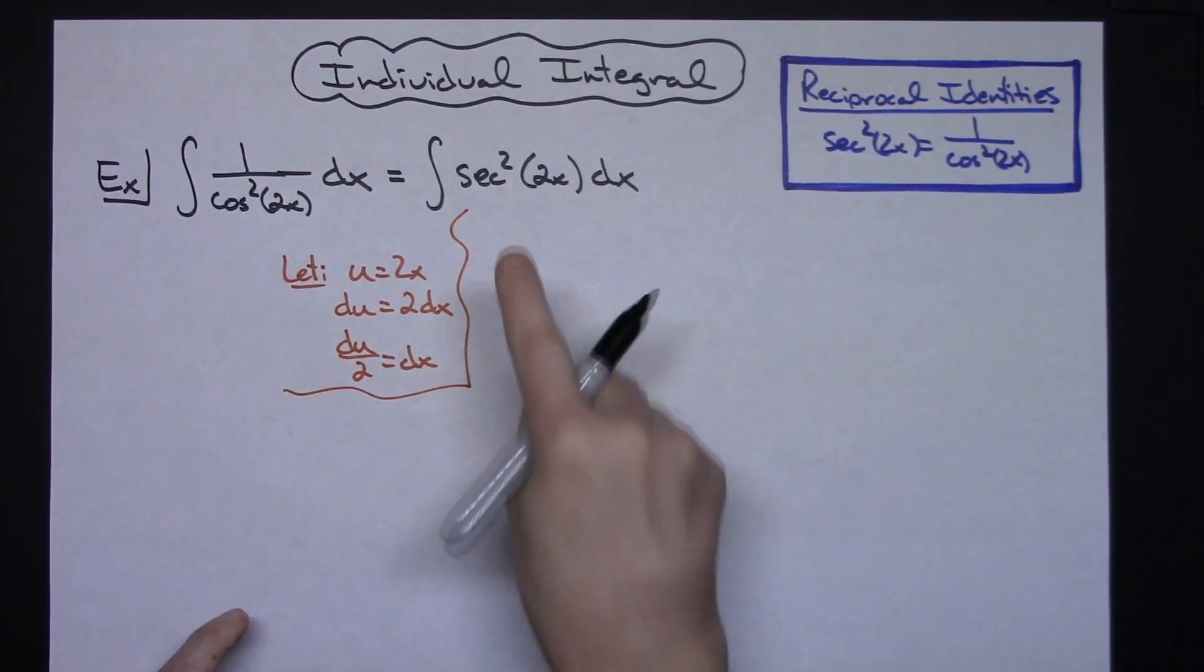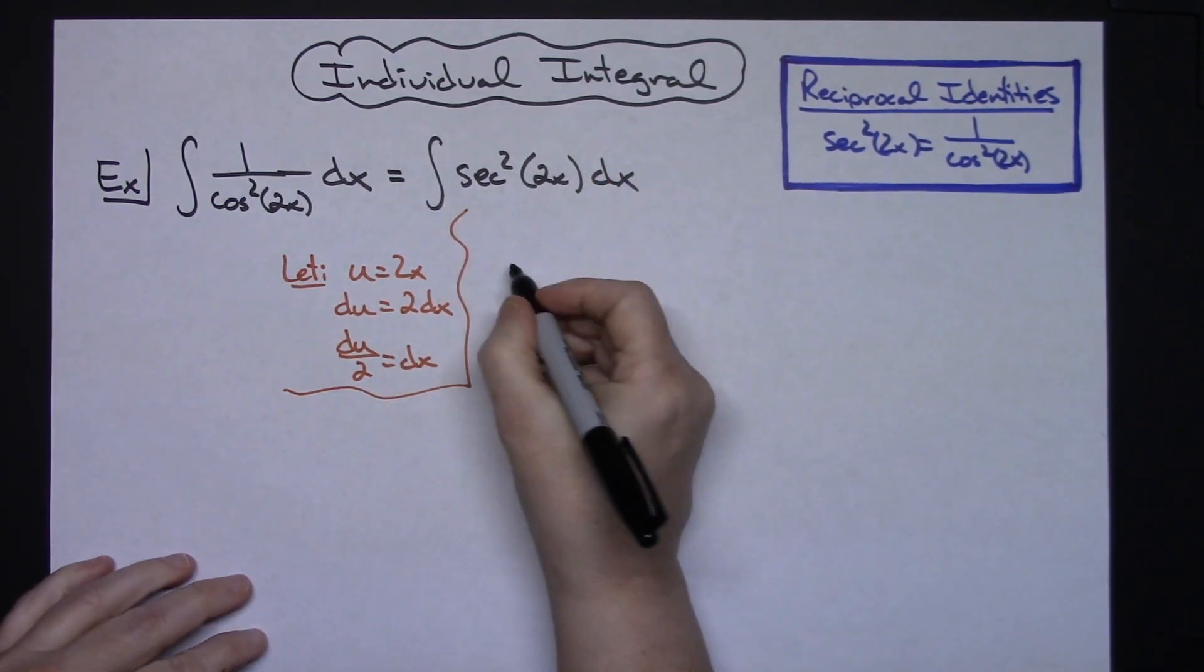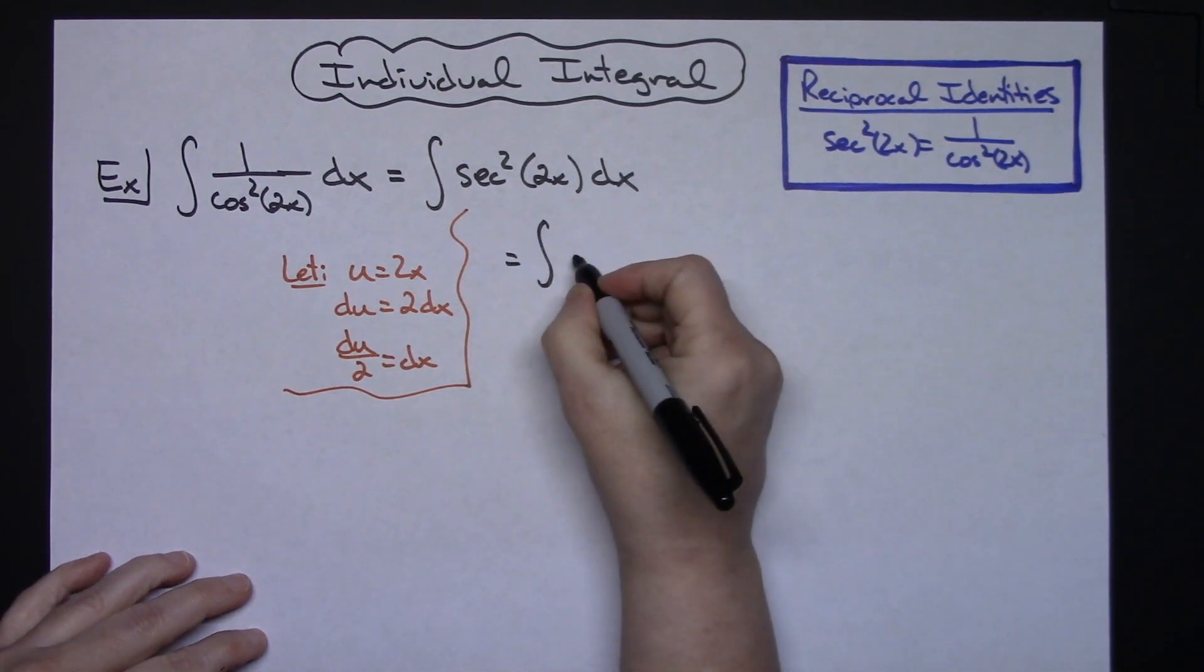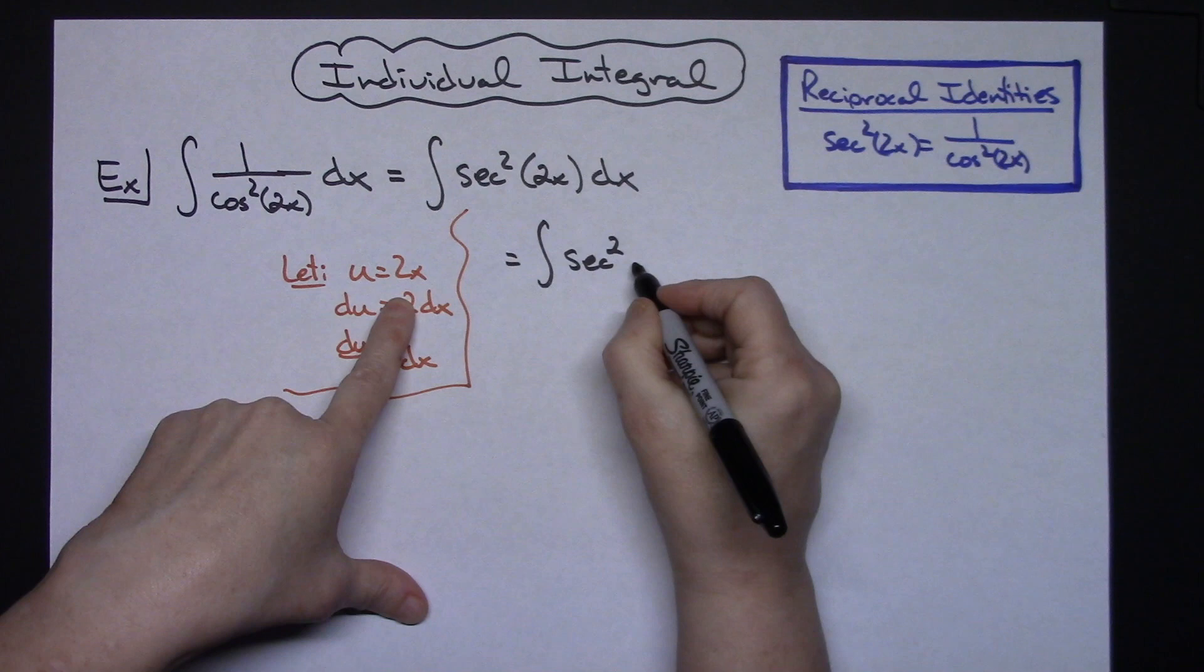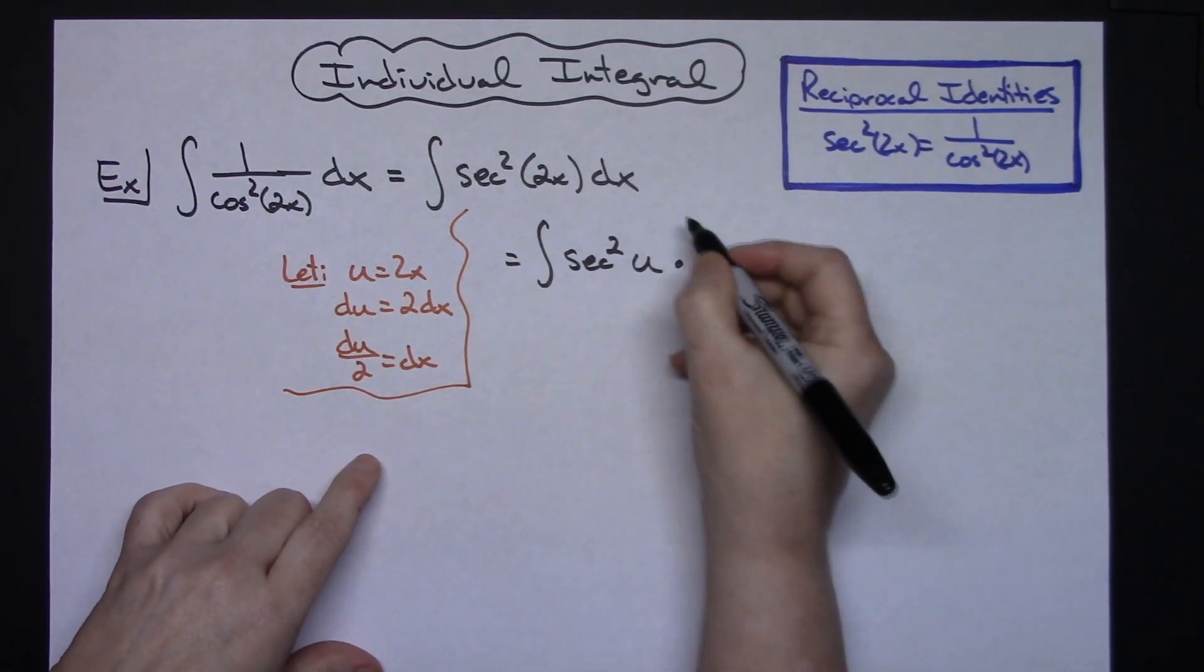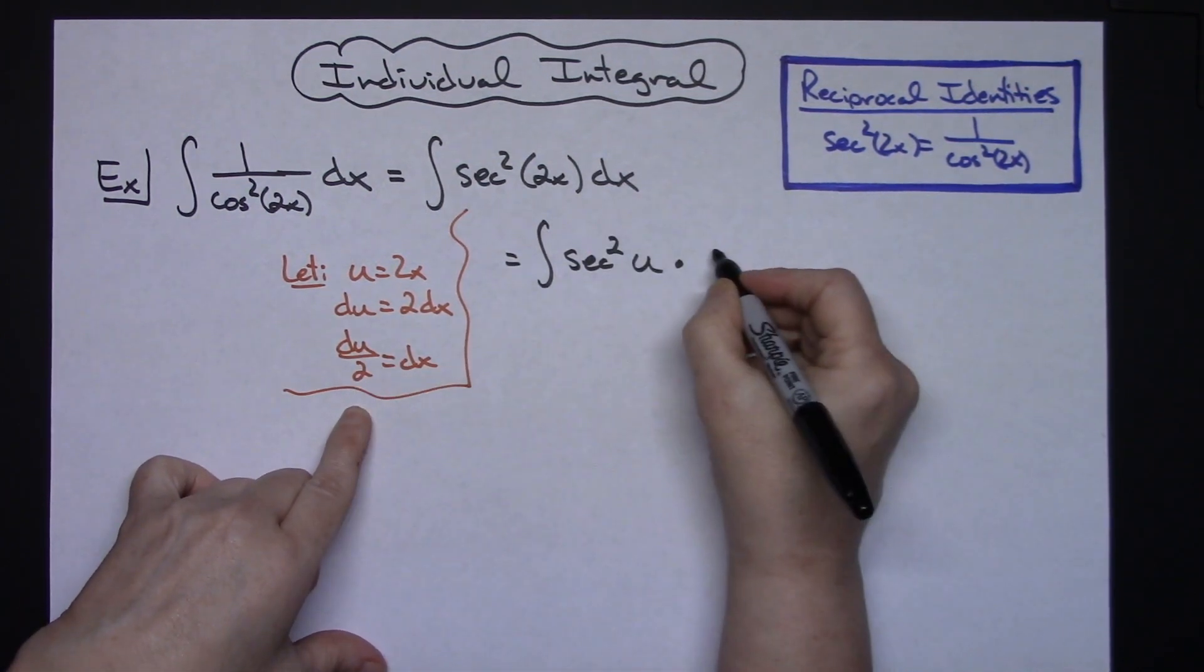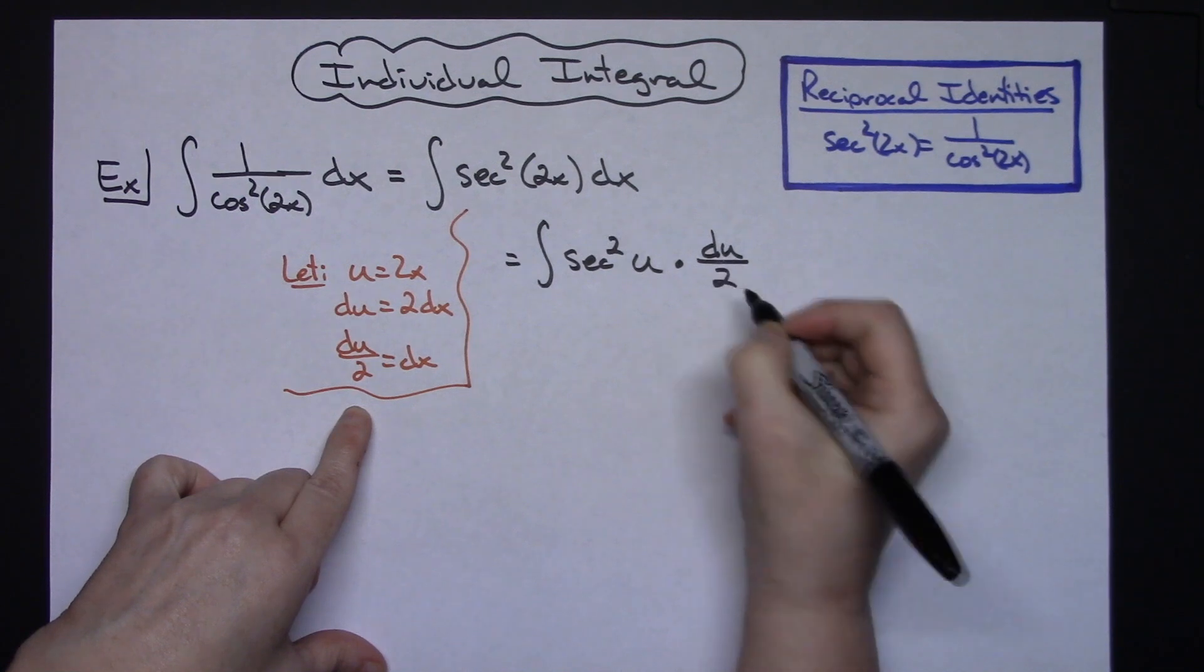Then I'm going to come back up to this integral and do my substitutions. So I'll have the integral of secant squared, replacing the 2x with u, and then replacing that dx with what it equals, du over 2.